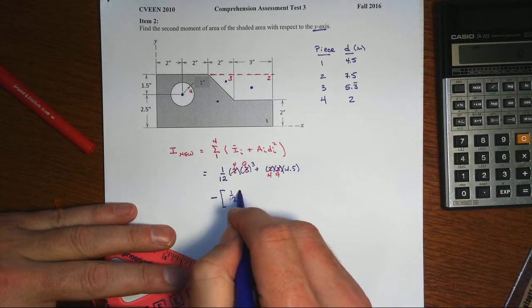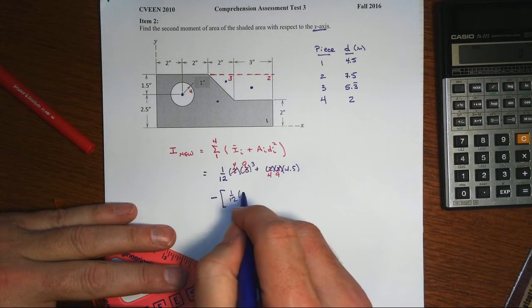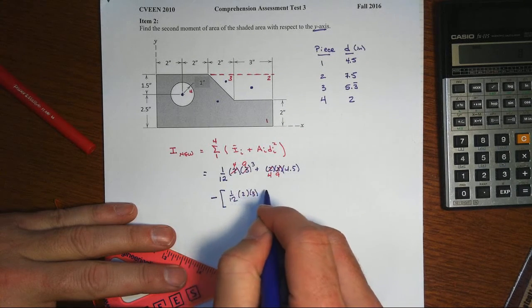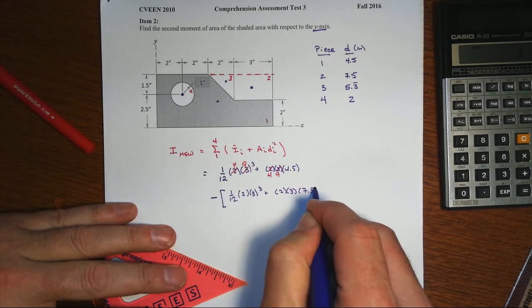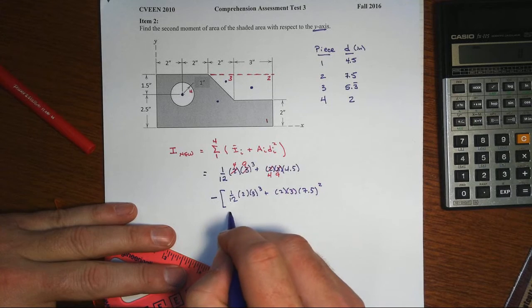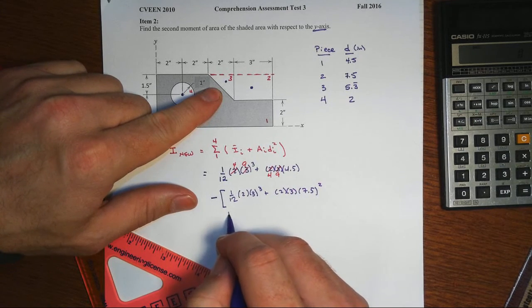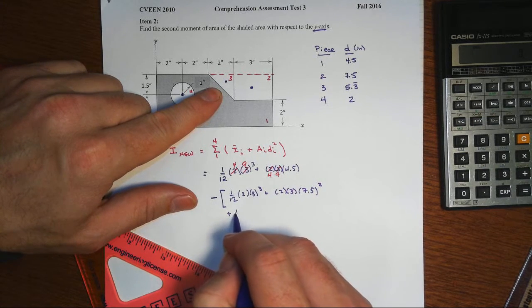Now we'll do the rectangle, the small one, 1/12 of 2 times the height cubed, plus its area times the total distance that it was moved. And then we get the triangle with respect to its own centroid.